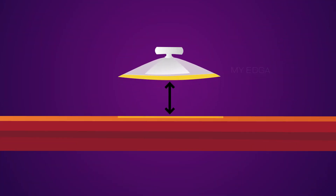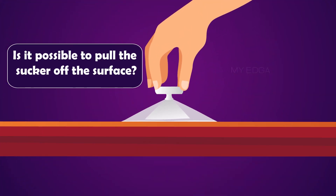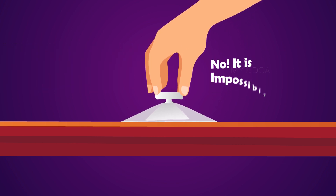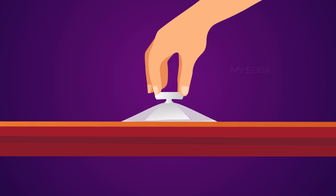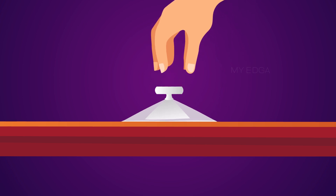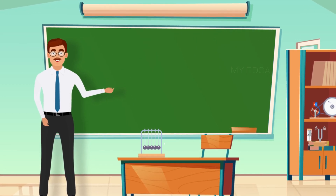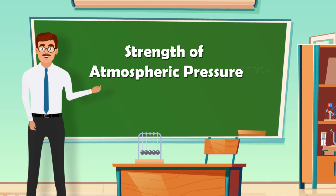Imagine if there were no air at all between the sucker and the surface — would it be possible to pull the sucker off the surface? No, it is impossible. That is how large the effect of atmospheric pressure is. Now you might have got an idea about the strength of the atmospheric pressure.